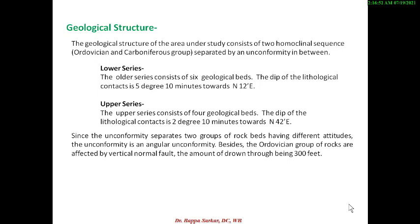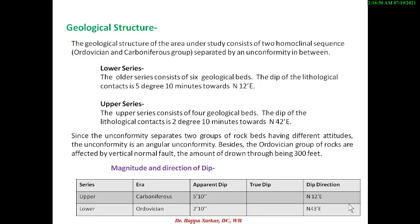Now prepare another table for magnitude and direction of dip. Columns include: series, era, apparent dip, true dip, and dip direction. Upper series (Carboniferous): apparent dip 2 degrees 10 minutes. Lower series (Ordovician): apparent dip 5 degrees 10 minutes. Calculate the true dip and fill in the dip direction. If you don't know how to calculate true dip, refer to my previous video.